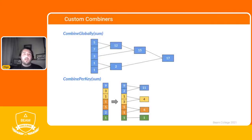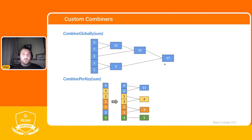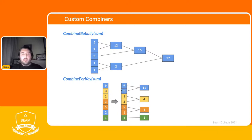Here's an example of a custom combiner doing summation. If we have five, five, seven and sum them we get 12; combining that with three gives 15; adding one and one gives two, combined with everything gives 17. When doing it per key, the same logic applies — we combine only elements sharing the same key and get the result.